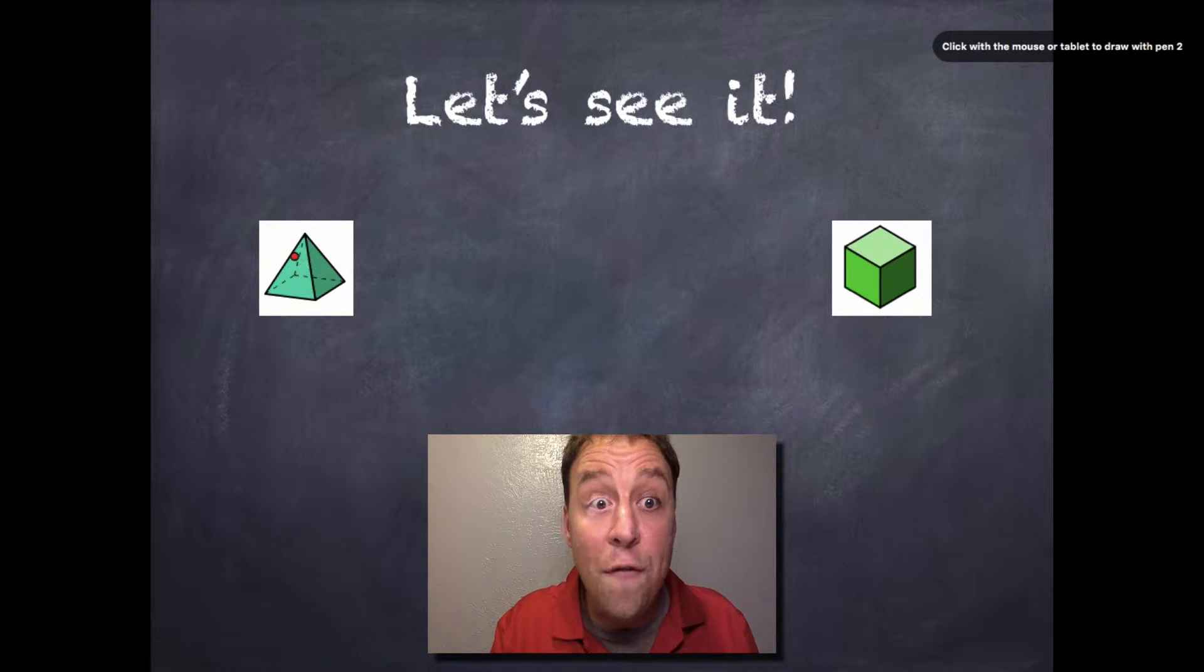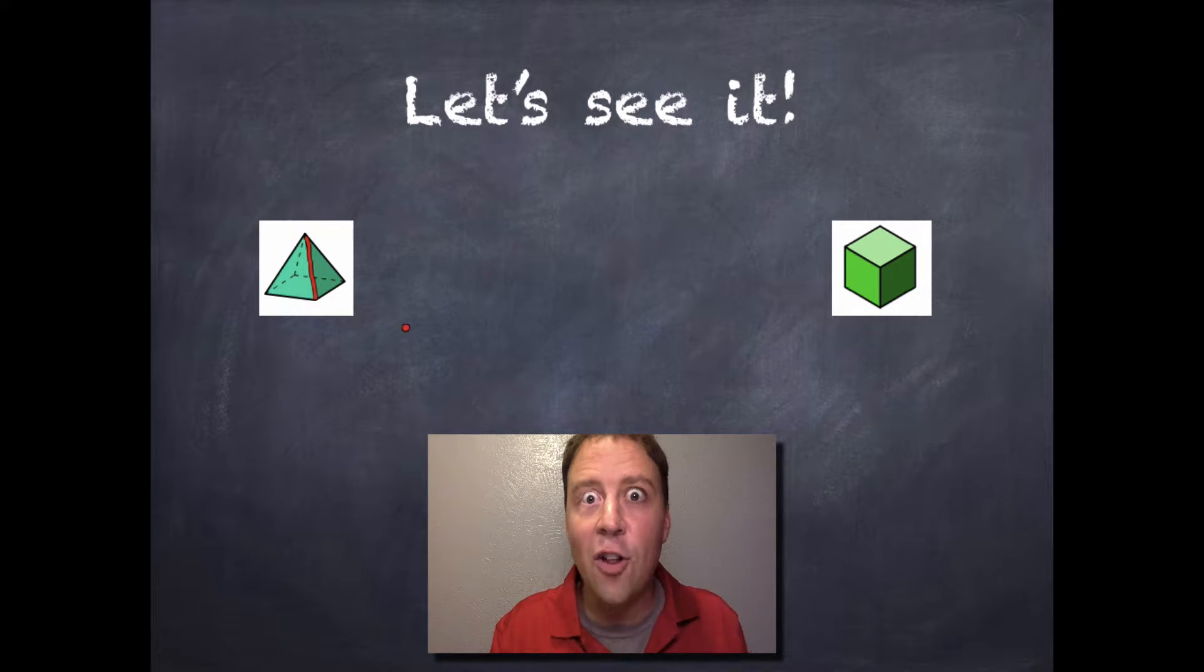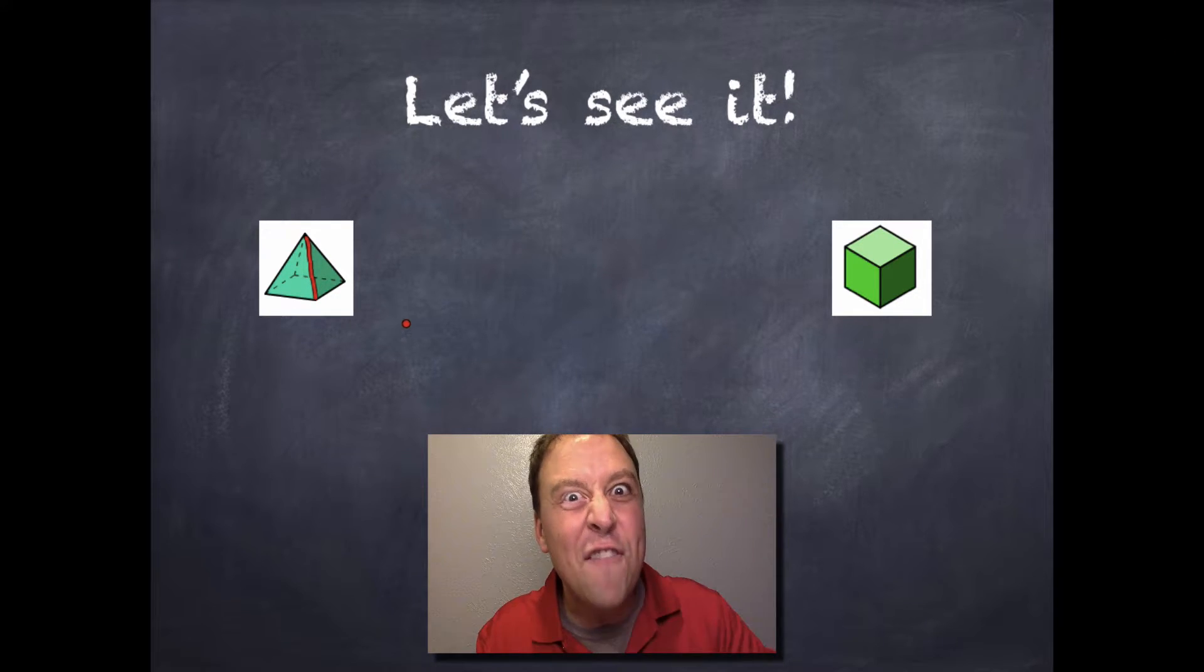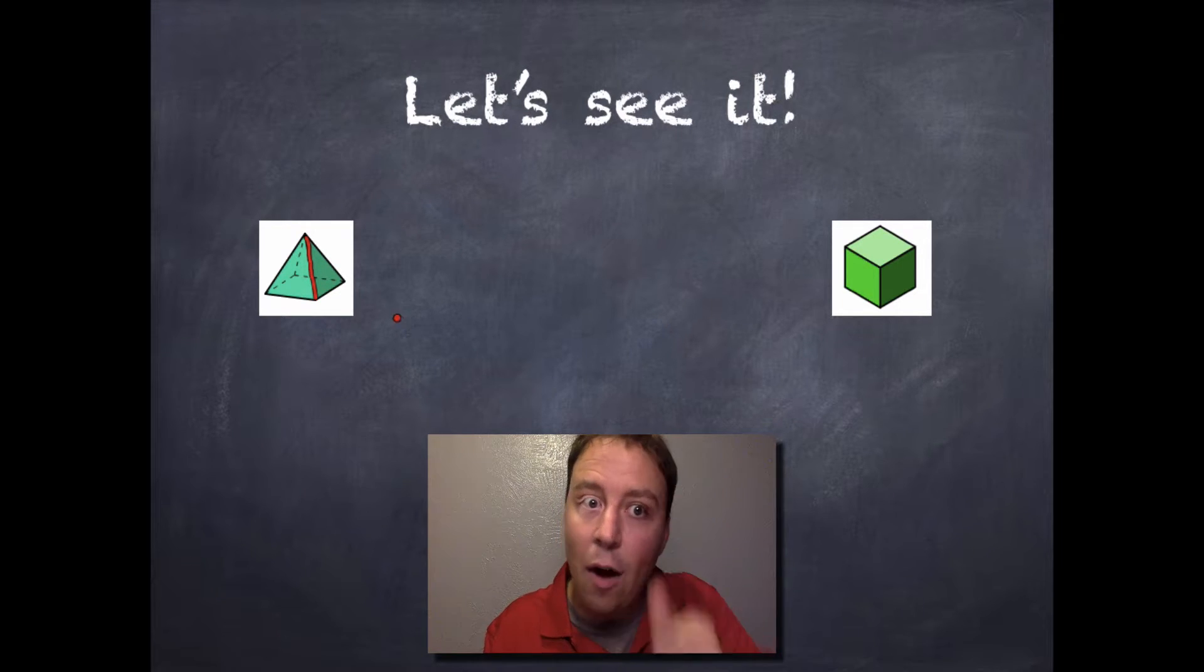Now, an edge is where two faces come together. So look, here's one face of the pyramid over here, and here's another face of the pyramid over here, and here's an edge where they come together. And if you were to run your finger along this, you might be able to imagine what that felt like. It's not really sharp, but you can definitely feel it. It points out, because it's where two things come together, and they form an angle.